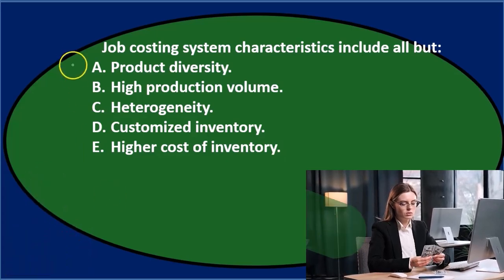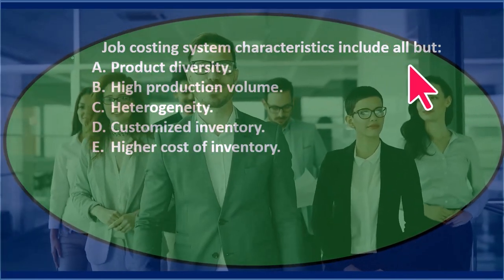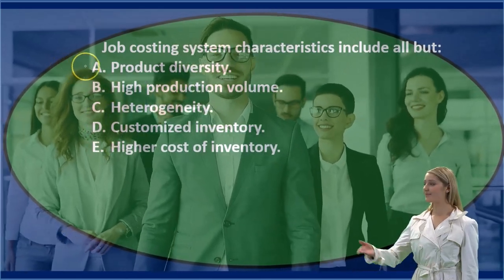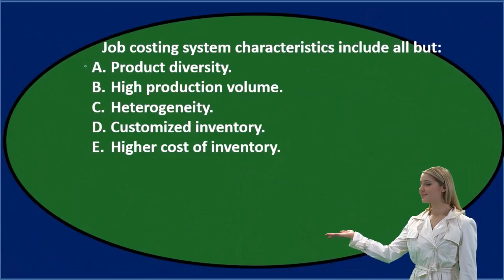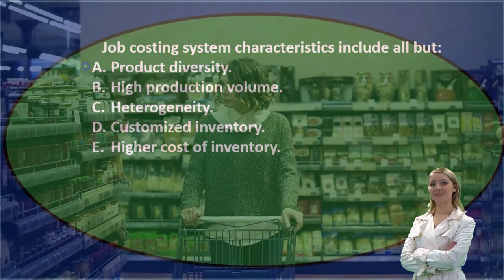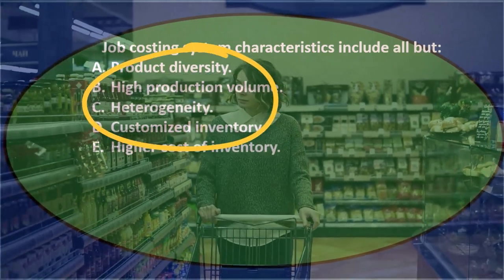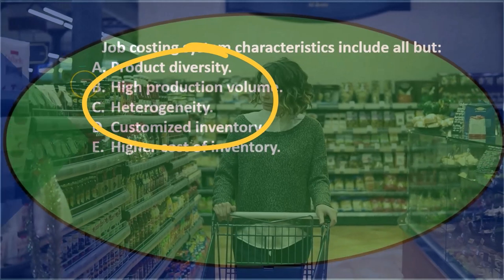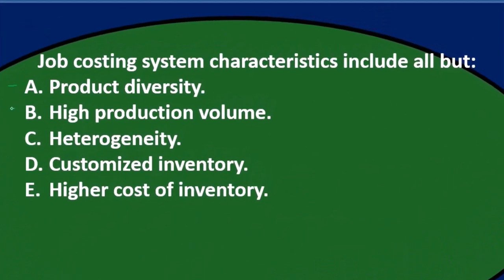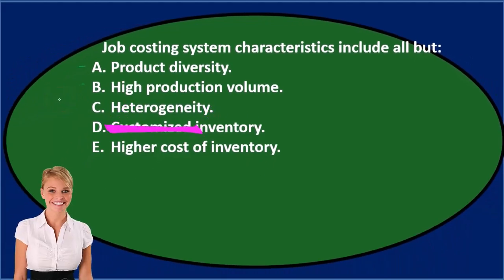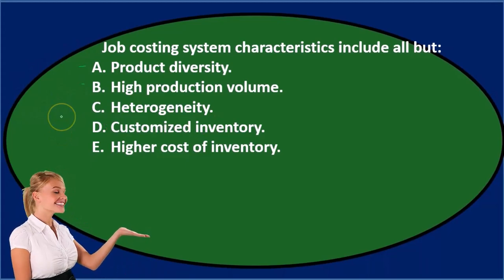Job costing system characteristics include all but — we're looking for the exception. Option A is product diversity — we might not know exactly what they're getting at, so we'll keep that for now. Option B is high production volume — that kind of depends on what we're comparing to, so we'll keep that as well.